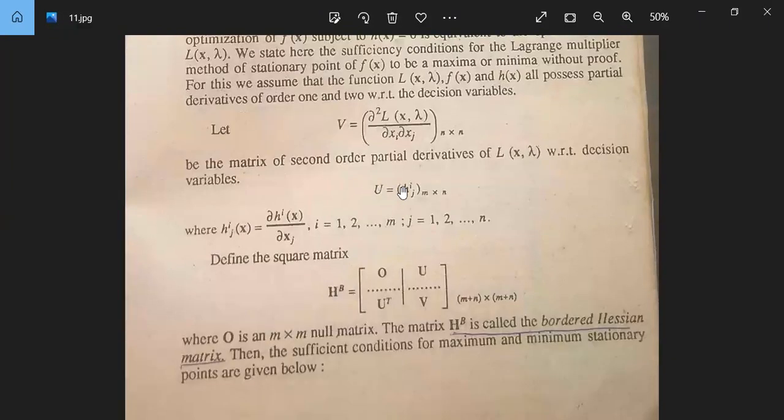U is equal to h_ij, m by n, where h_ij(x) is del h_i(x) by del x_j, i equal to 1 to M, j equal to 1 to N. This concept is clear.